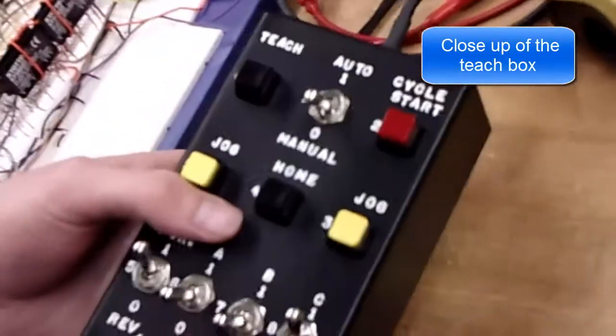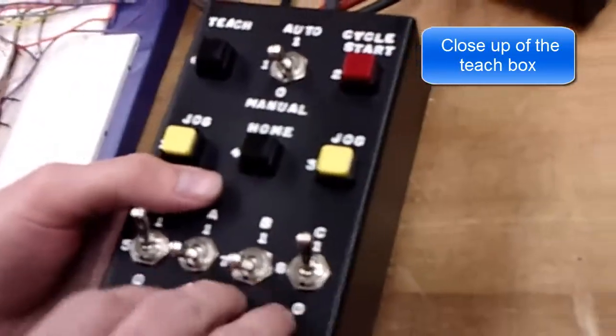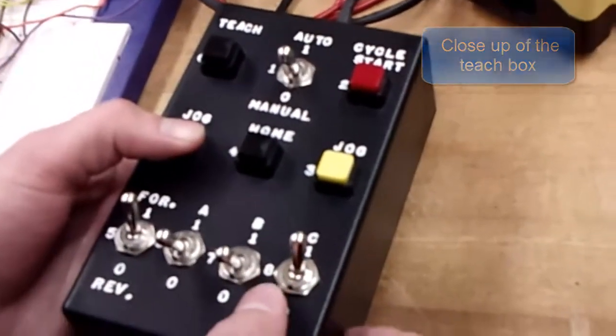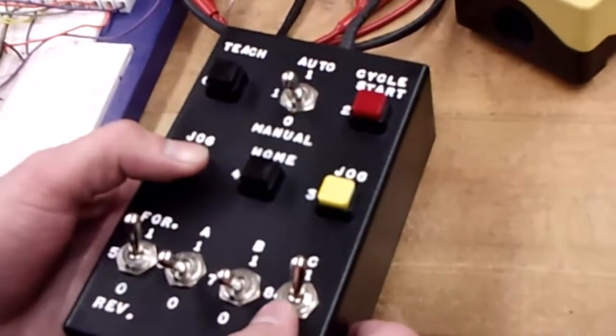We're going to teach it in manual mode. Each one of these changes which axis of the robot that you're jogging. So right now I'm in my shoulder position. I'm jogging it forward.